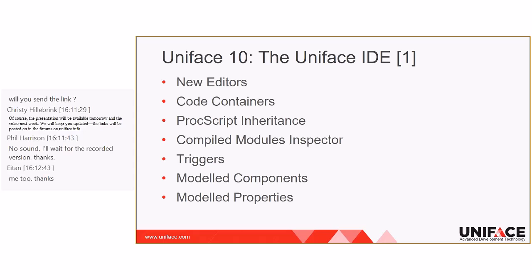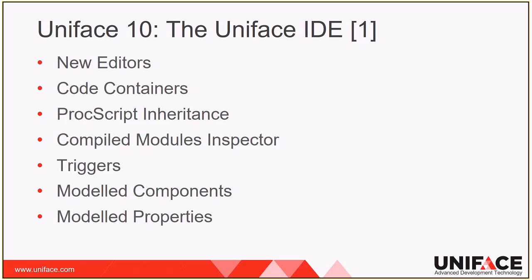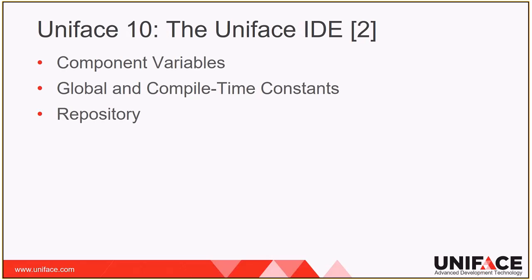On modeled properties — formerly entity interface templates, field interface templates, field layout templates, and field syntax templates — modeled properties are now created in typed libraries with a fixed name LIB. In Uniface 9 they were defined as independent objects. Component variables are now declared procedurally in the variables block in the declarations code container of components. In Uniface 9 they were defined declaratively as a separate object.